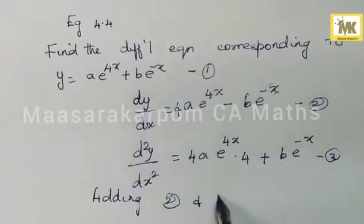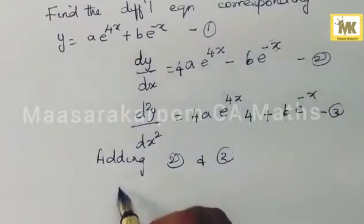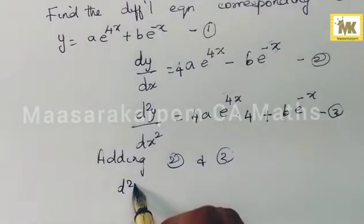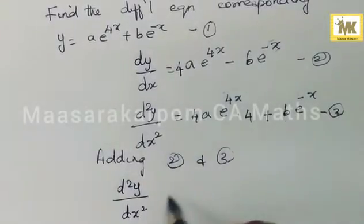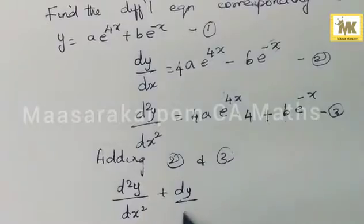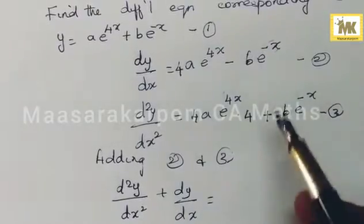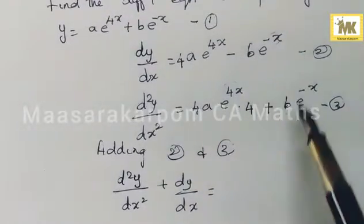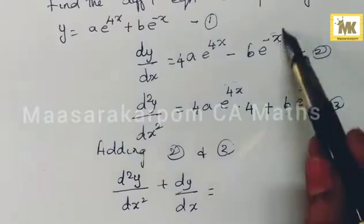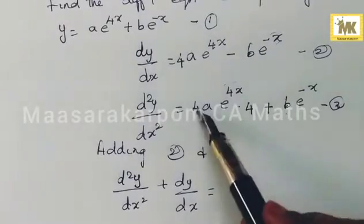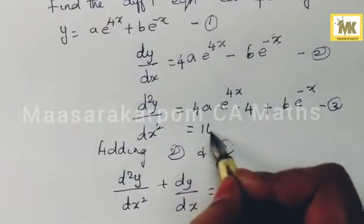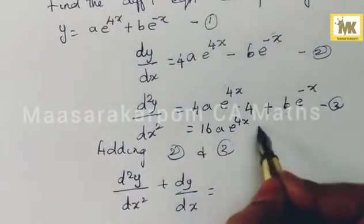Left side plus left side, right side plus right side: d²y/dx² plus dy/dx equals minus b e to the power minus x plus b e to the power minus x, which cancels. So you will get 16a e to the power 4x plus 4a e to the power 4x.